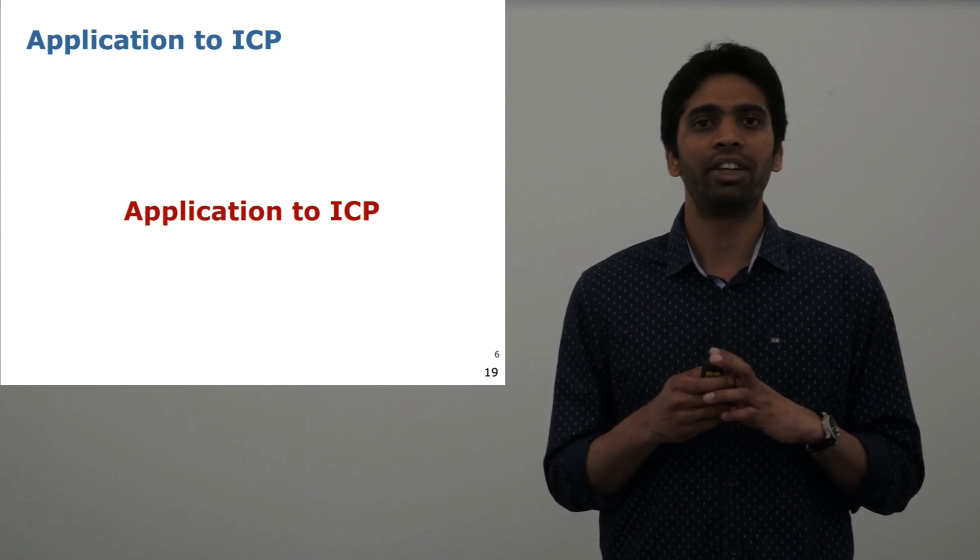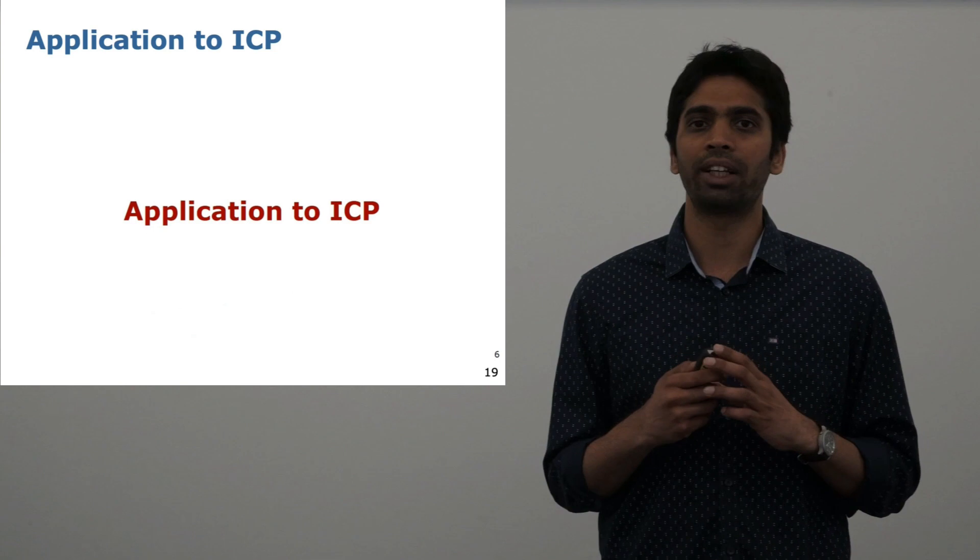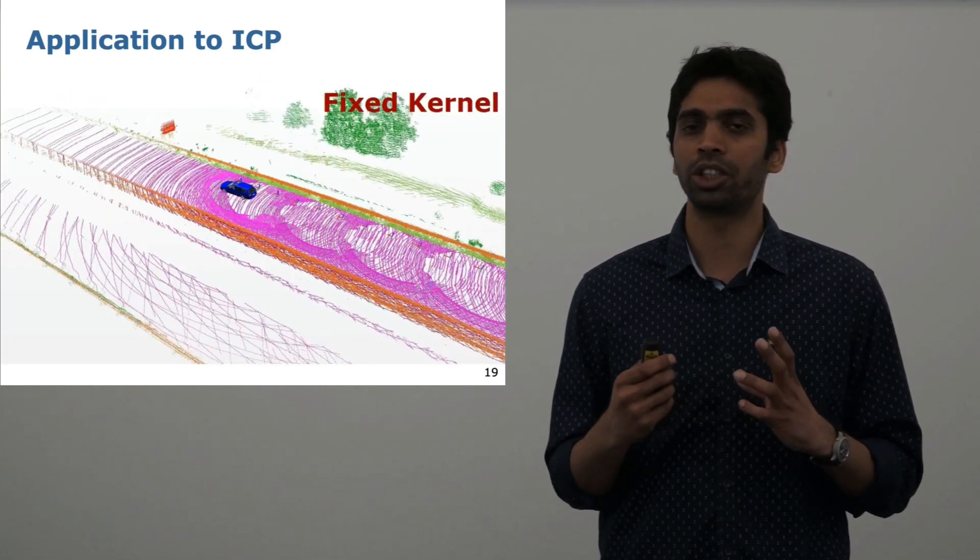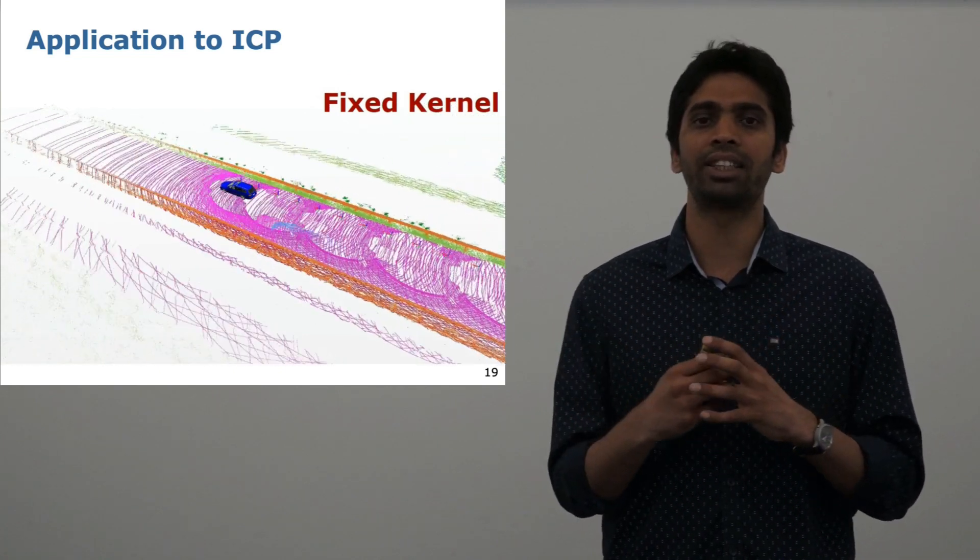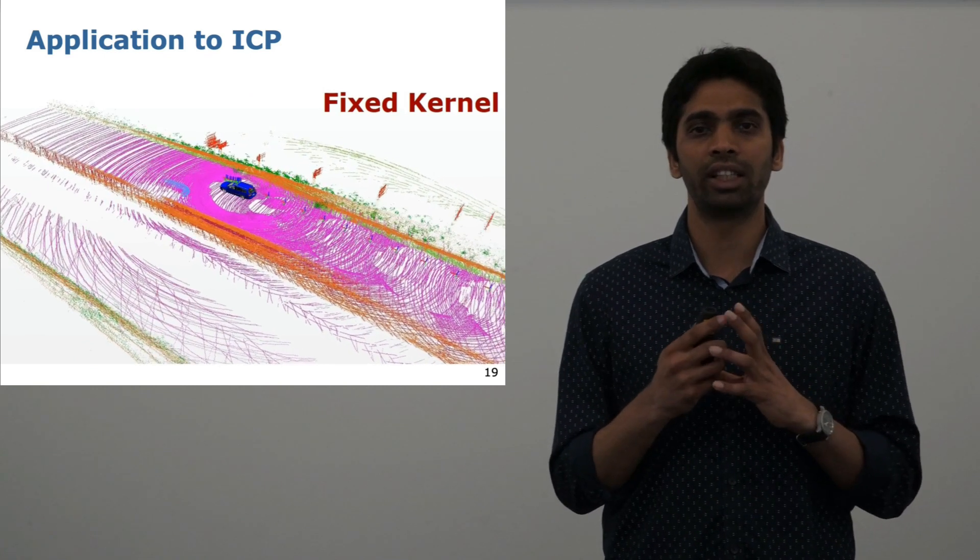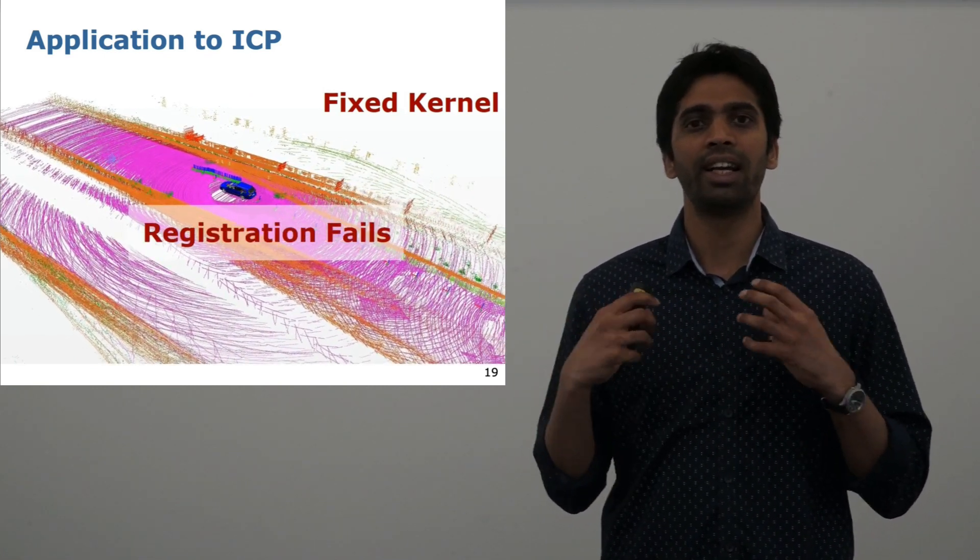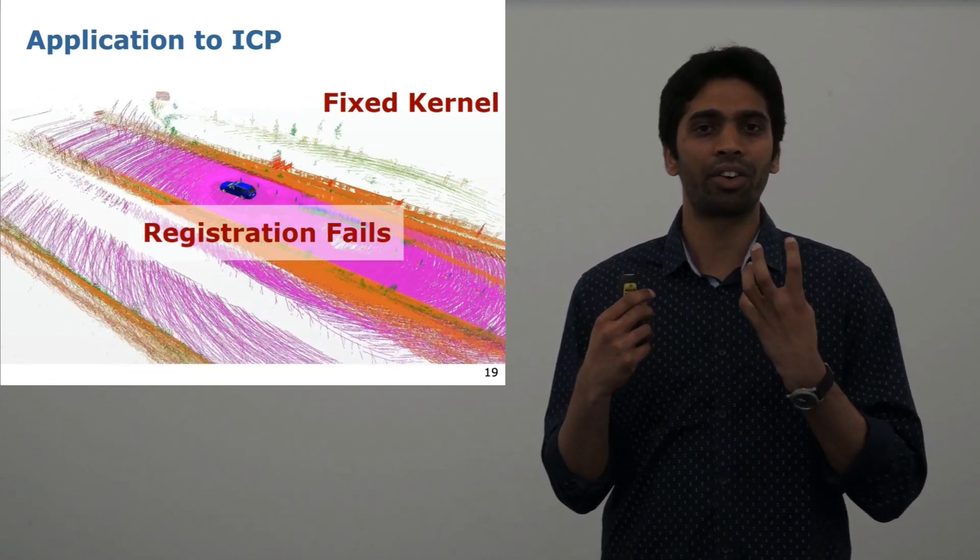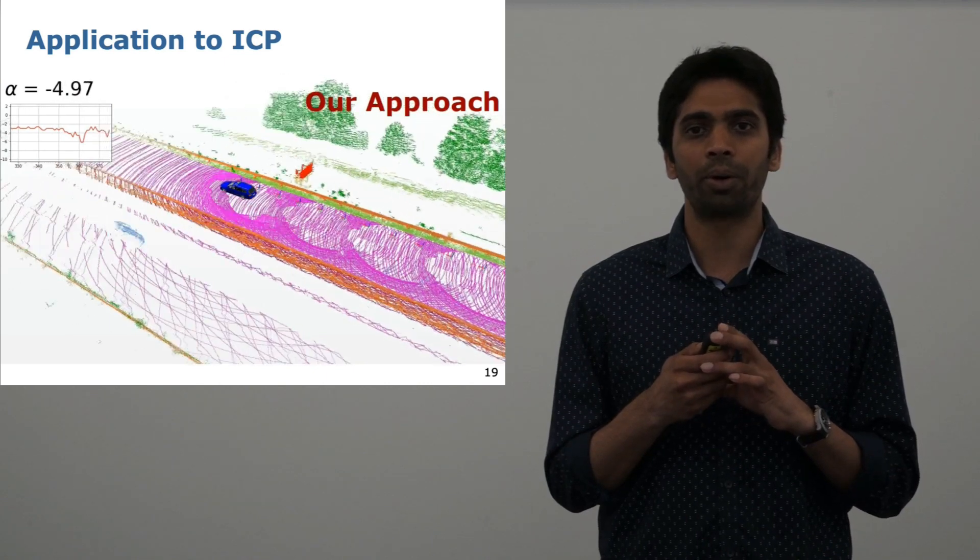Finally, we apply this to two applications in robotics. The first application is that of an iterative closest point algorithm, where we match consecutive scans captured from a LIDAR scanner. Here you see a fixed kernel. However, as the car passes by, the ICP gets stuck or dragged into this car and fails.